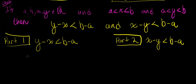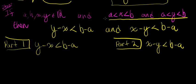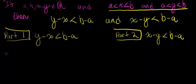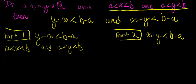Let's start with part one. In part one, we're going to dissect the hypothesis: A is strictly less than X, and X is strictly less than B, and A is strictly less than Y, and Y is strictly less than B. That's the same as saying, in more long-winded form, A is strictly less than X, and X is strictly less than B, and A is strictly less than Y, and Y is strictly less than B.